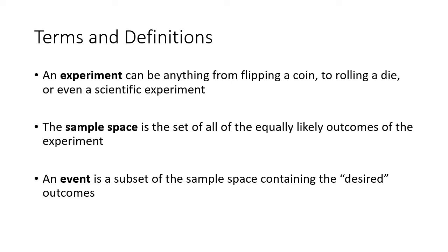The sample space is the set of all of the equally likely outcomes of that experiment, and the phrase 'equally likely' is very important here. When we want to talk about probability, it's important that we count our sample space to make all of the outcomes the same likelihood. An event is a subset of that sample space that contains the desired outcomes — whatever it is we're hoping to find the probability of.